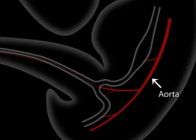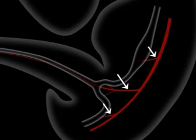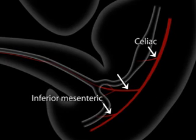Here's the aorta. Here are the three arteries that supply the GI tract: the celiac for the foregut, the inferior mesenteric for the hindgut, and the superior mesenteric for the midgut.